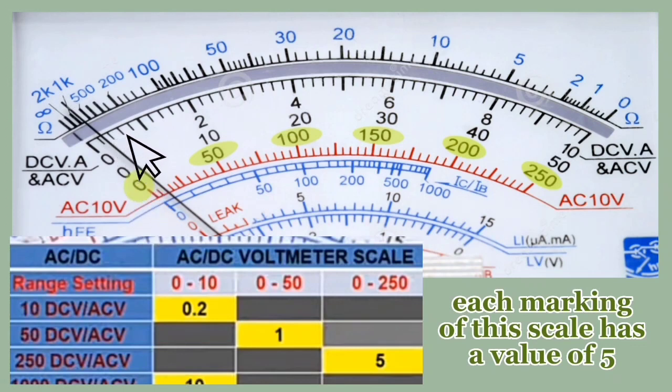Now let's proceed to 250 volts. Let's start reading: 0, 5, 10, 15, 20, 25, 30, 35, 40, 45, 50. Between 50 and 100 is 75. Between 100 and 150 is 125. So that is for 0 to 250 volts.